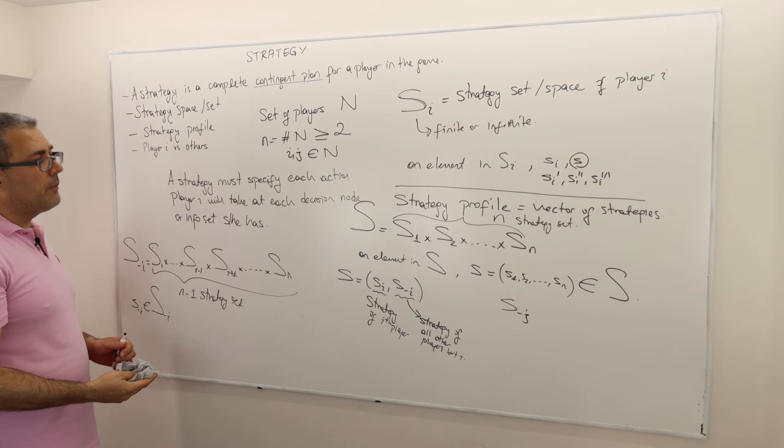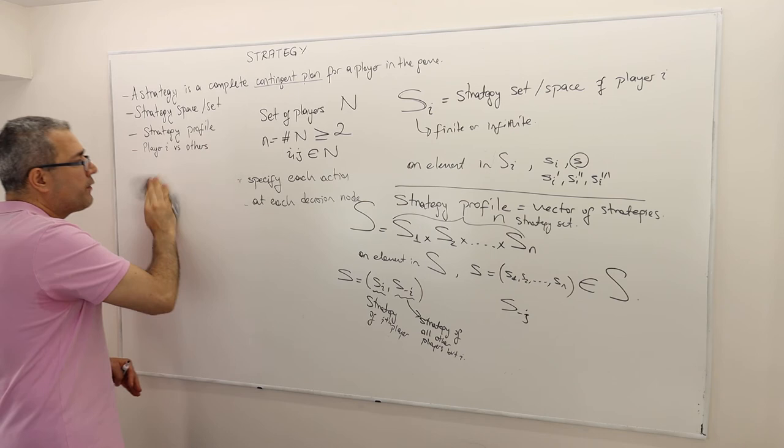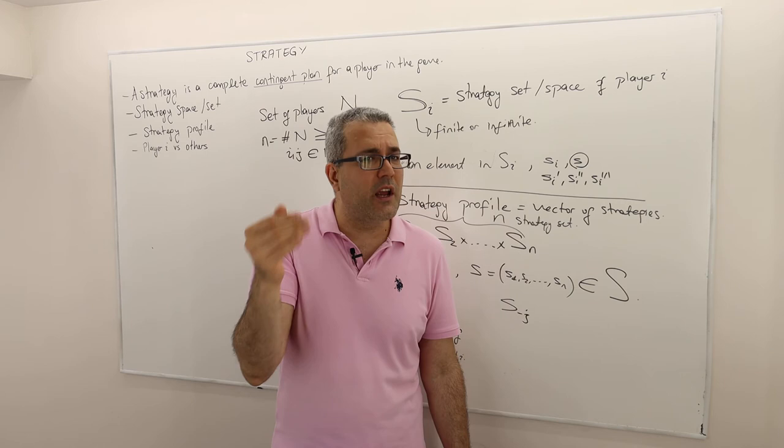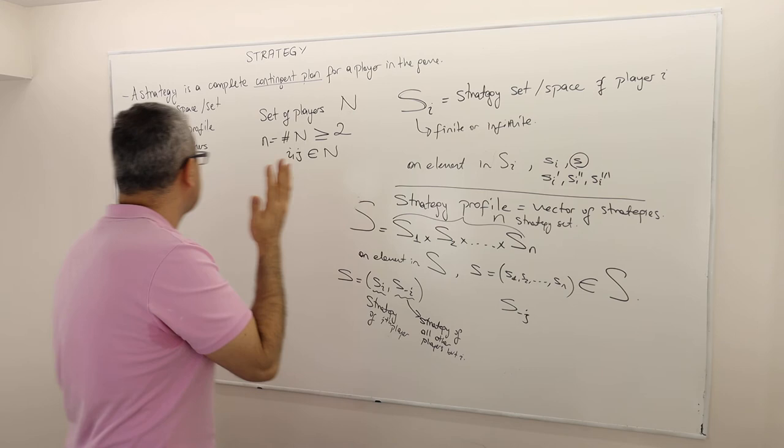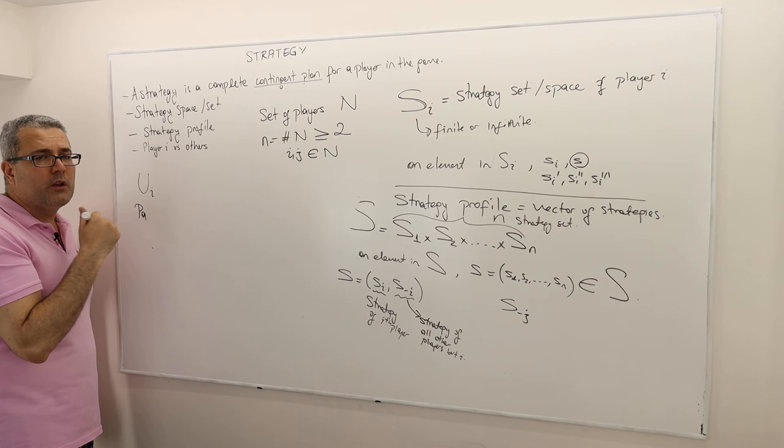So the next object that I would like to talk about is the payoff function. Remember, we talked about preferences over outcomes. Yes. So preferences over outcomes can actually be represented by a utility function. So this is what we're going to assume. So we're going to assume that preferences over outcomes are complete transitive and reflective binary relation. And so they can be presented by utility function, et cetera.